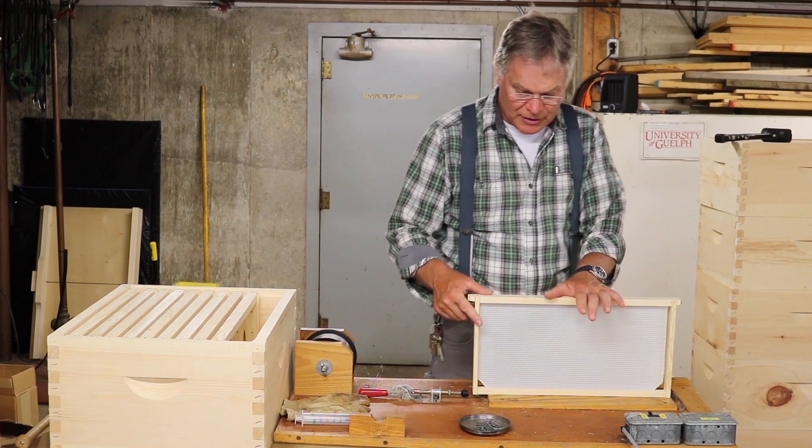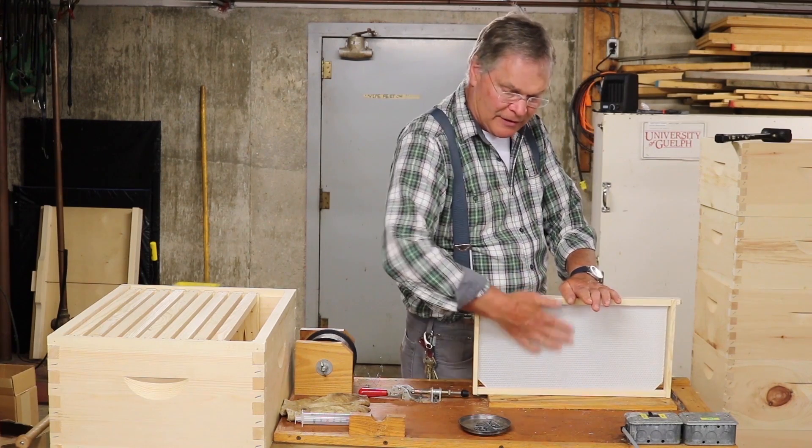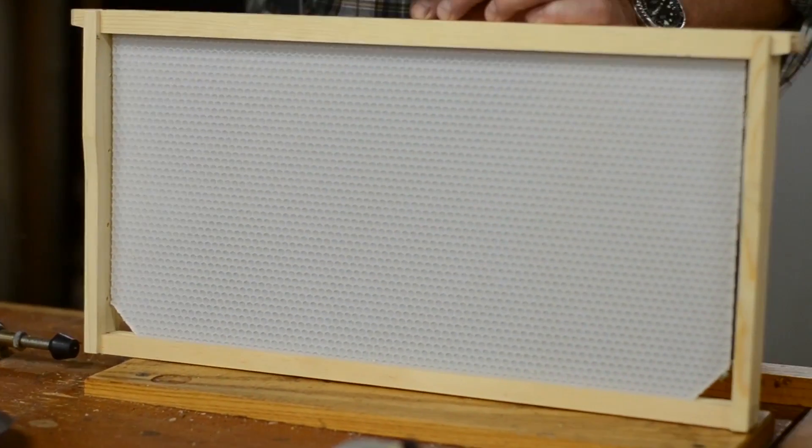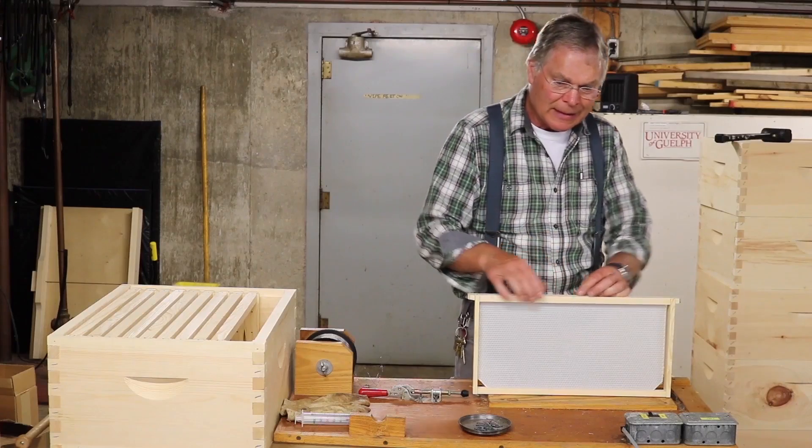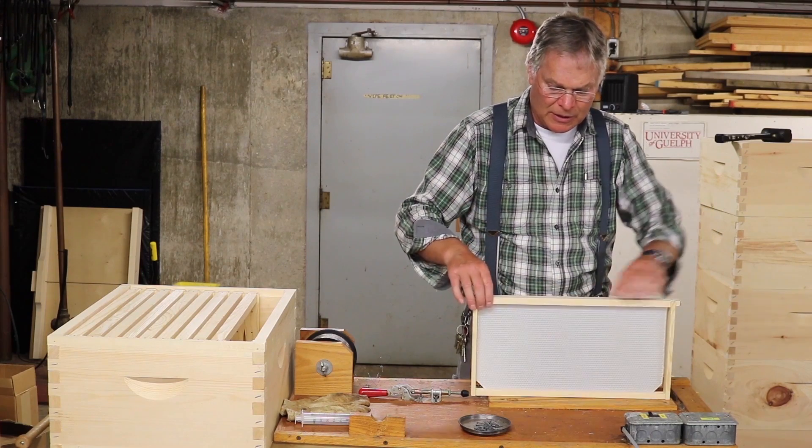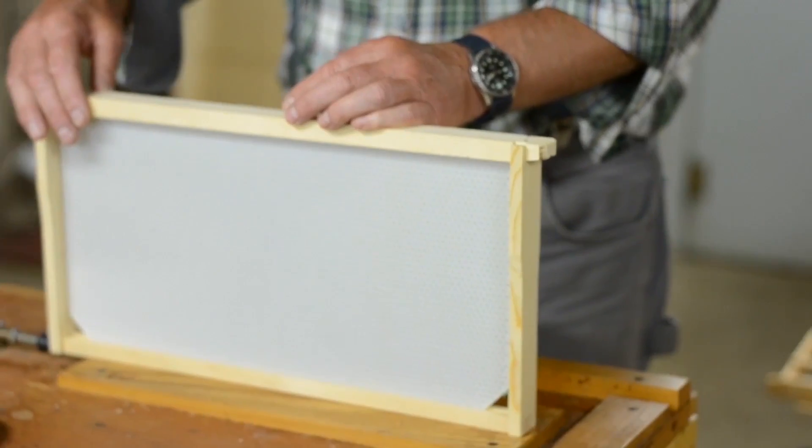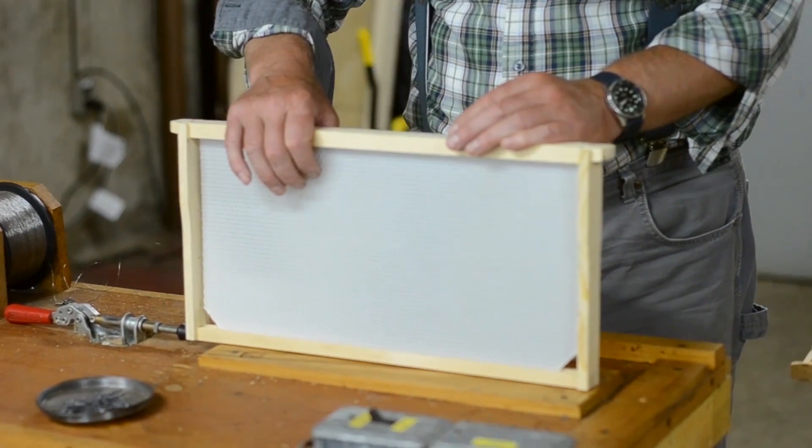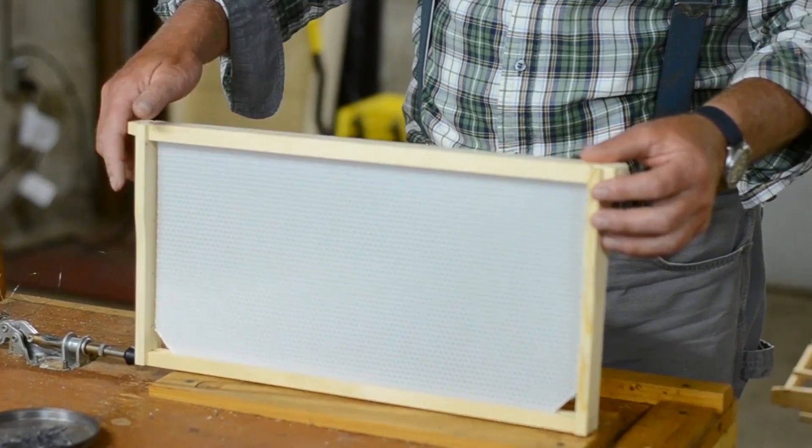One advantage of this is that it stays very flat and so you get flat comb and that's really desirable. If comb has any kind of bows to it then as you pull those frames out you rub and crush bees. It's also very simple to install and relatively economical.